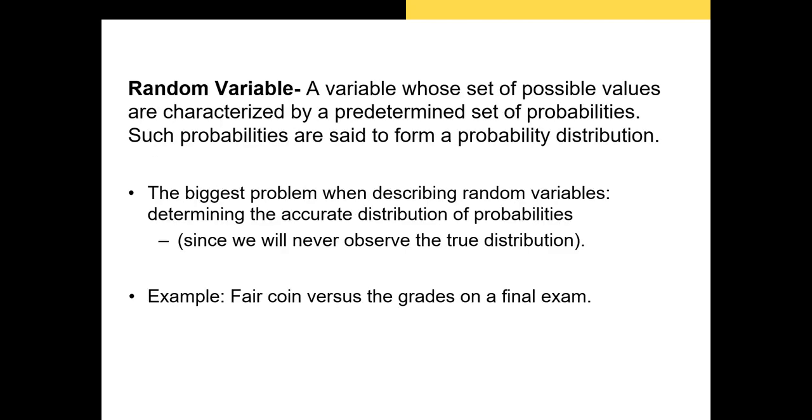Since we're going to define a return as a random variable, let's first define a random variable. A random variable is a variable whose set of possible values are characterized by a predetermined set of probabilities. Such probabilities are said to form a probability distribution.